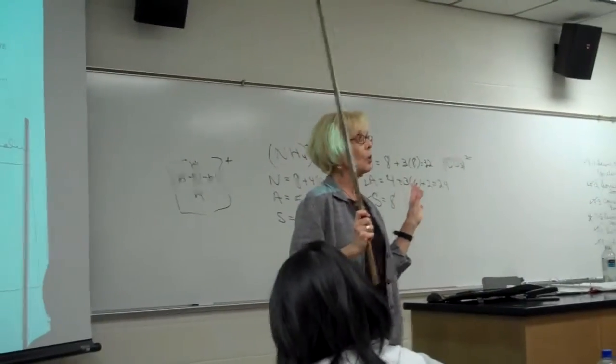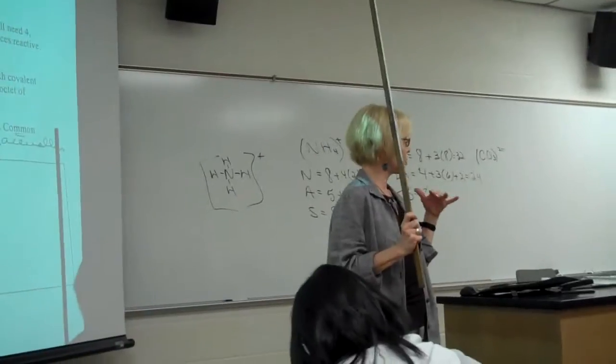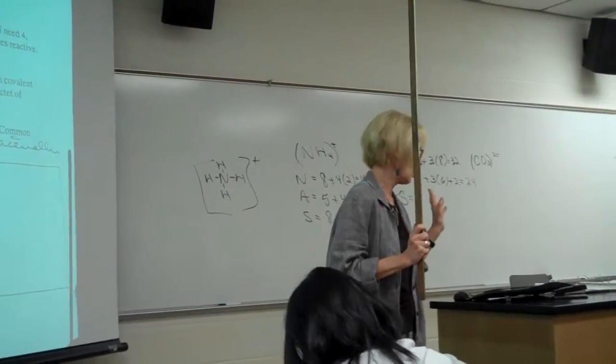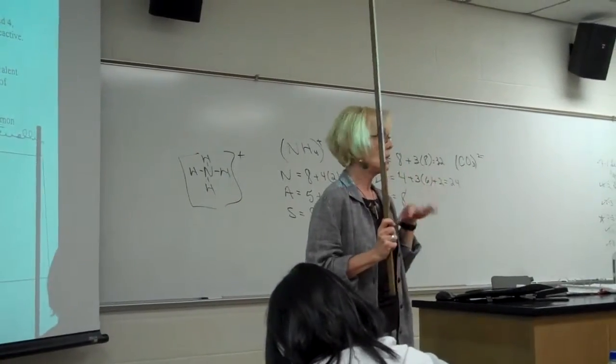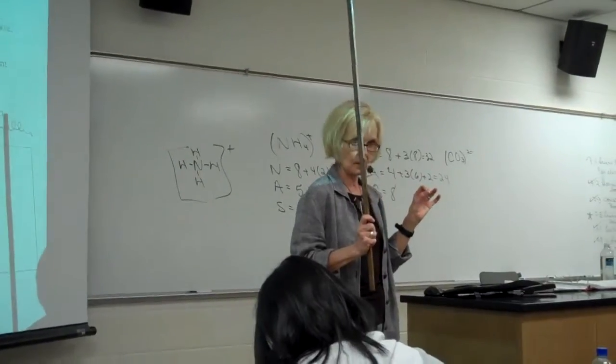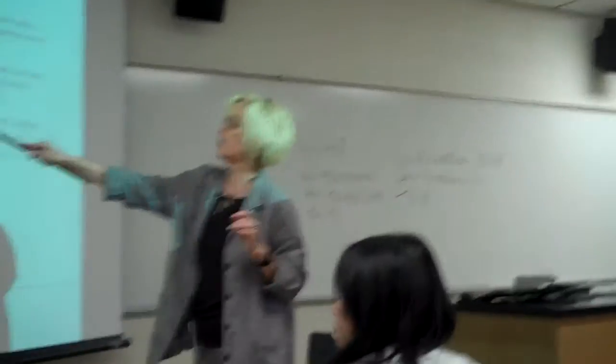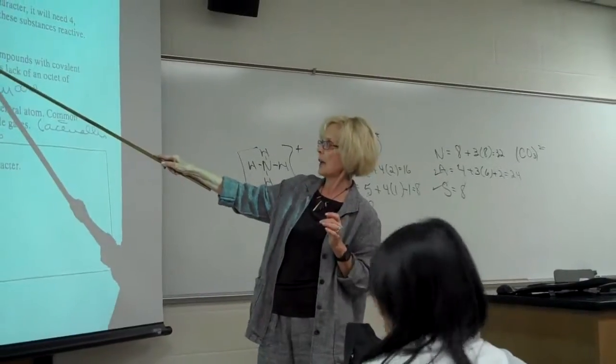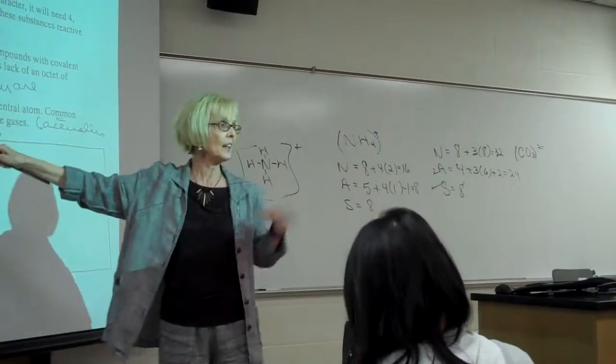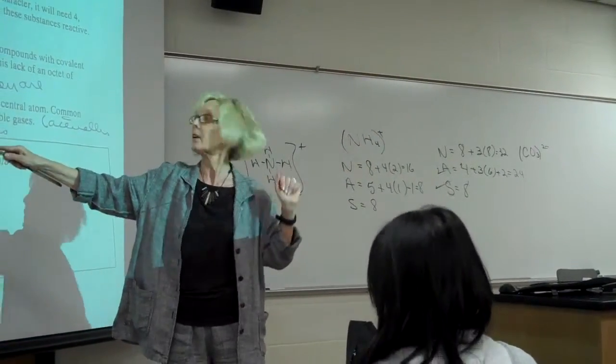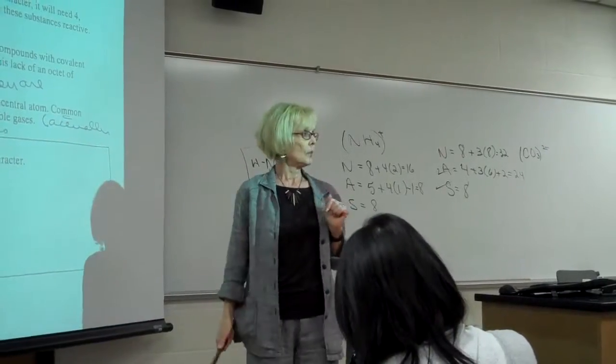It could have ionic character, or depending upon experimental conditions, it could have covalent character. So if I say treat this thing as covalent, if boron or other 3A atoms are the central atoms in compounds with covalent character, they'll need six, not eight.